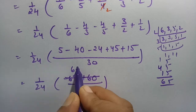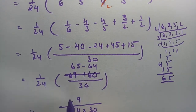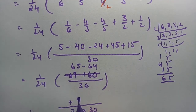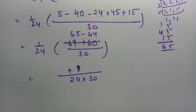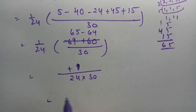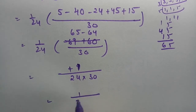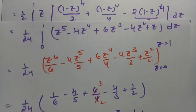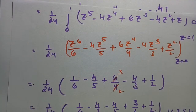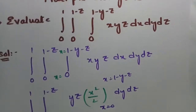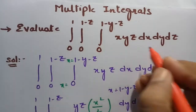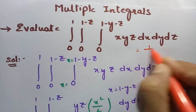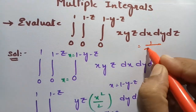So this is plus 55 minus 64 and this will be plus 1, giving 1/24 times 1/30. Therefore the answer is 1 by 720. This is our final answer — 1/720.